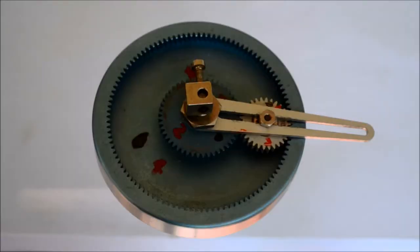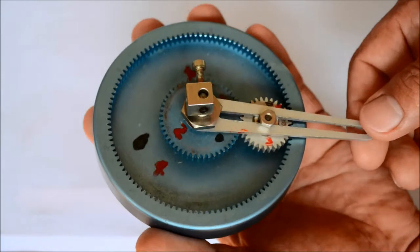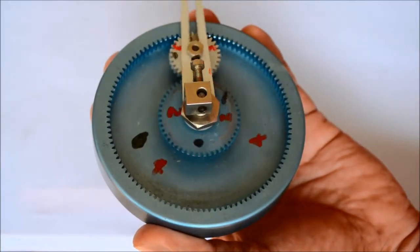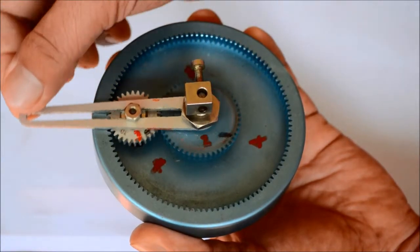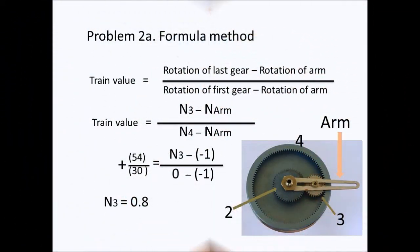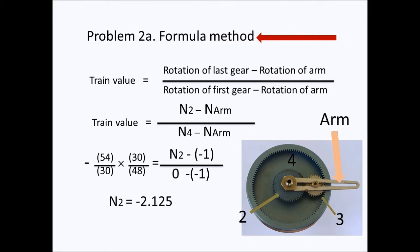We can see the mechanism in that condition — gear four is stationary while the arm rotates once in the negative direction. By the formula method we can easily find the number of rotations of gear three, and also by the formula method we can find the number of rotations of gear two.